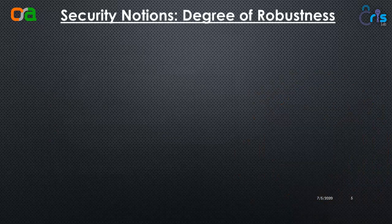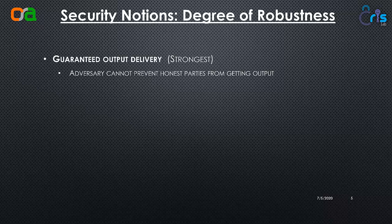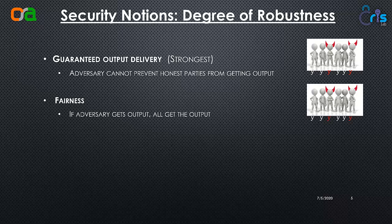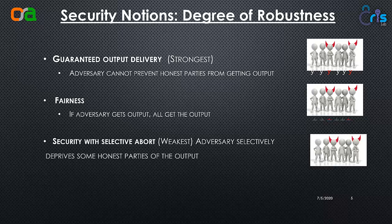We further specify the degree of robustness in terms of security notions. The strongest notion is guaranteed output delivery, where an adversary cannot prevent honest parties from getting the output — honest parties are always guaranteed to get the function output. The next weaker variant is fairness: if the adversary gets the output, all parties get the output, else nobody does. The third and weakest version is selective abort, where the adversary can selectively deprive honest parties from getting the output — the adversary gets the output for sure but can prevent some honest parties from getting it. In our case, we look at the strongest notion: guaranteed output delivery.